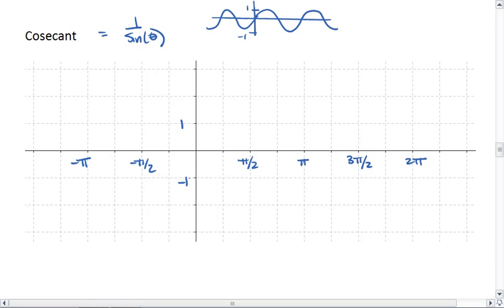What we find is that when sine is 0, that's going to create a vertical asymptote for cosecant. And that occurs at the origin, at pi, at 2 pi, negative pi.